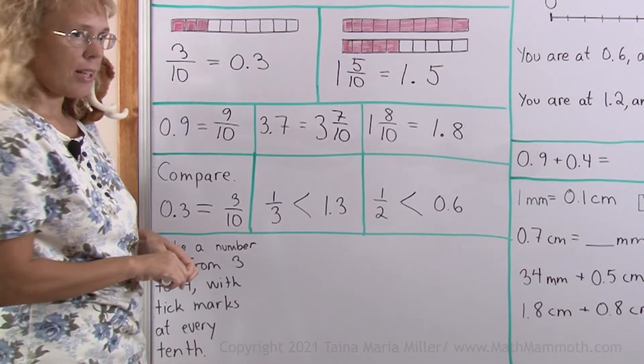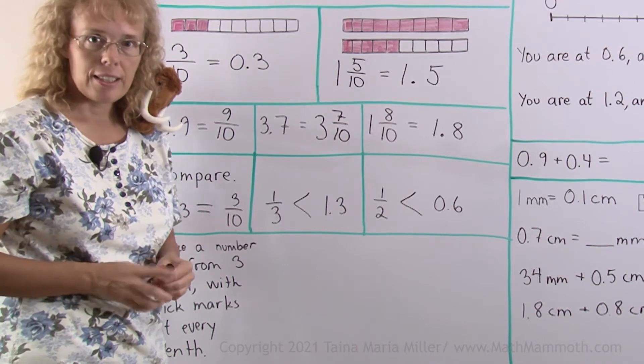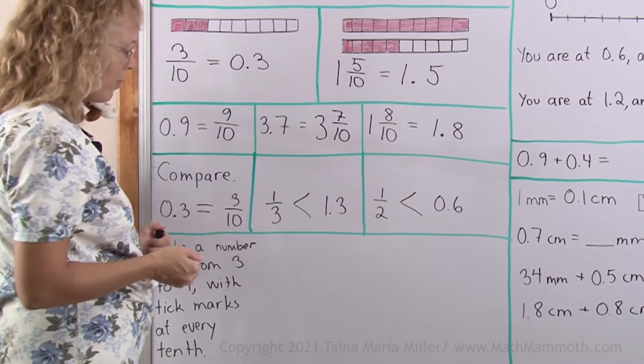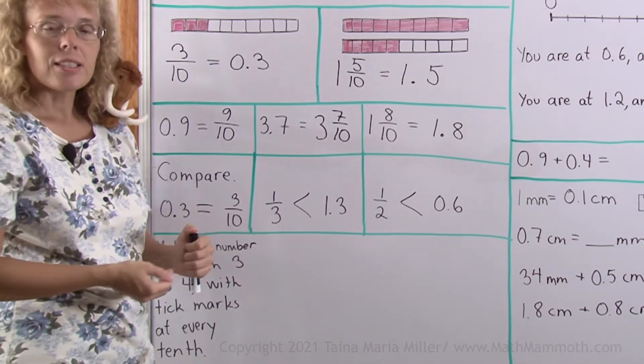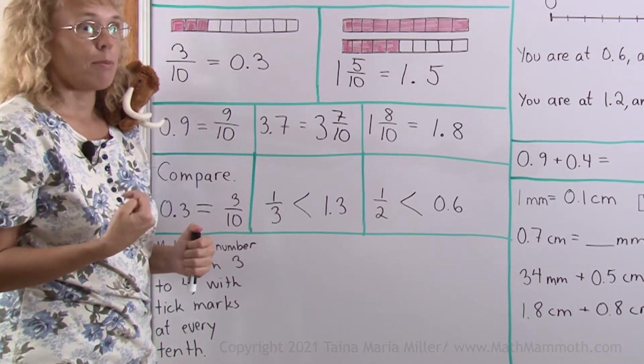Here we make a number line from 3 to 4 with tick marks every tenth. You need a ruler for that. After you have your tick marks, we will write the decimal numbers under them.